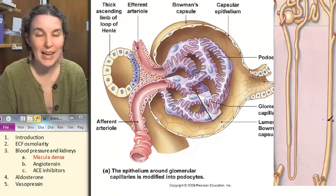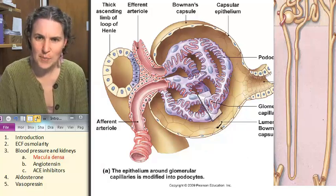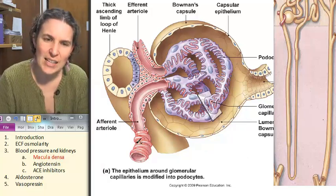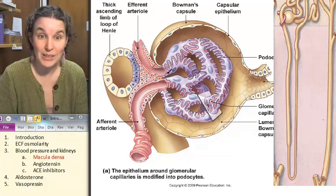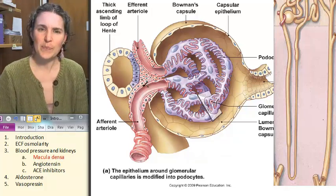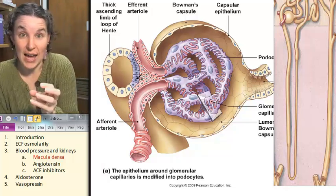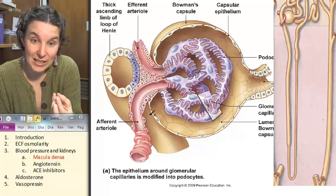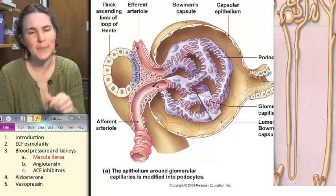But I also have this picture, which we also have seen before. And in this one, you can see that here's my Bowman's capsule and here's the afferent arteriole coming in. Here's the efferent arteriole leaving.